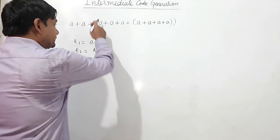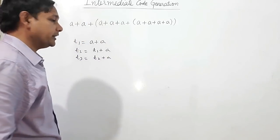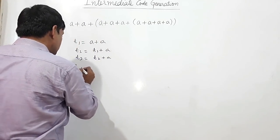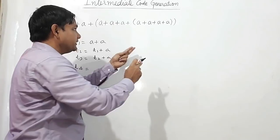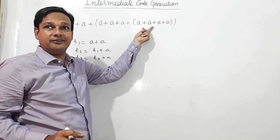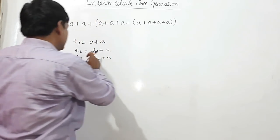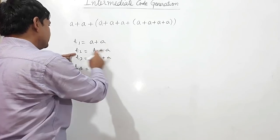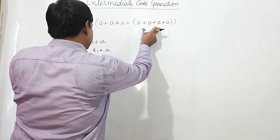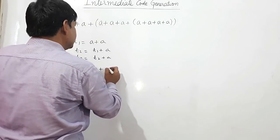Now, in the outer bracket, three a's have been added here. So its result will be stored in t4. We can understand that three a's have already been added in this bracket. So this three a's — two a's plus one a — is with t2. So t2 plus this can be added directly. I will use t2 plus t3.